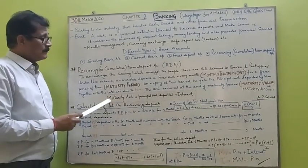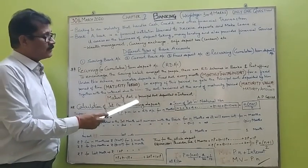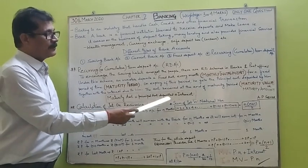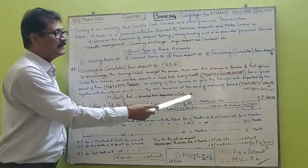Thus, the maturity amount is equal to the principal amount deposited plus the interest.